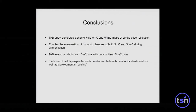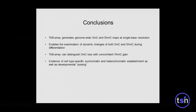To conclude, I hope I've demonstrated that the TAB array can generate 5-HMC and 5-MC maps at single-base resolution, and that this enables the examination of dynamic changes between these two epigenetic marks during differentiation. Importantly, the TAB array distinguishes between 5-MC loss with concomitant 5-HMC gain, which would just appear unchanged if you look via standard bisulfite treatment. We've also seen evidence of cell-type-specific euchromatin and heterochromatin establishment, as well as developmental poising. With that, I'll conclude and take questions. Thank you very much.